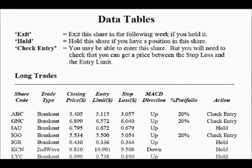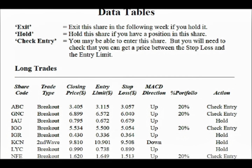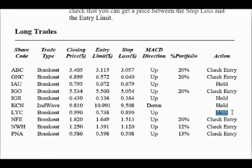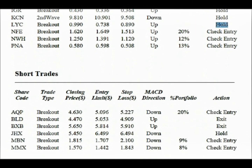The final section in the newsletter is the data tables. Here is all the information needed to actually buy and sell. The tables give the closing price for the week, plus the figure for the entry limit and the stop loss, and the direction of the MACD line. Then there is the portfolio percentage figure. This tells you what position size you can purchase for this share, and this has been calculated using the 2% risk rule and the position of the stop loss. The last column in the data tables gives you precise instructions for trading. If the action says 'check entry', you may be able to buy depending on if you can get a price between the entry limit and the stop loss. If the action says 'hold', it means the stop loss is past the entry limit and an entry is no longer possible — however, if you are already in this share, then continue to hold it. If the action says 'exit', then exit you must, as something has triggered an exit, either the momentum or the stop loss.